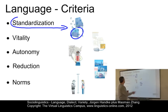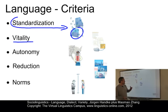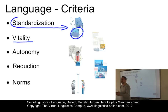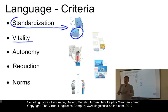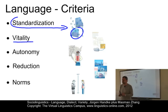A second criterion is vitality. This refers to the existence of a living community of speakers, distinguishing languages which are alive from languages which are dead. For example, Manx — a Celtic language formerly spoken on the Isle of Man in the Irish Sea — as compared with Welsh, a living language spoken in Wales. Both are Celtic languages.